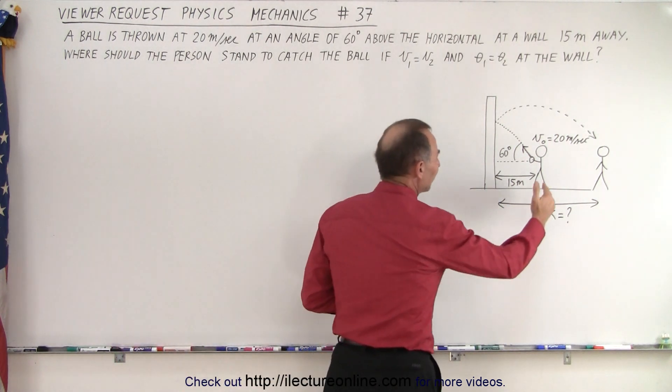The way to do the problem is as follows. What we can see here is if there's no change in velocity at the wall and there's no change in angle at the wall, it is almost as if the ball just continues on like this and the person will have to stand over there to catch it. If there was no wall, that would be the exact same problem.